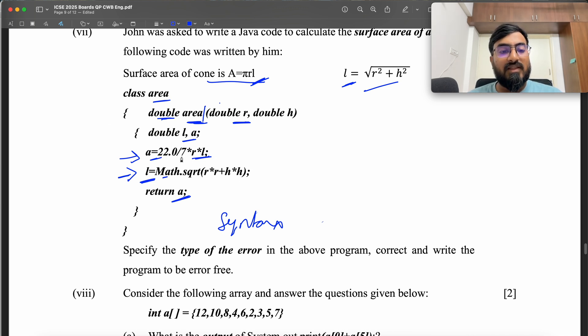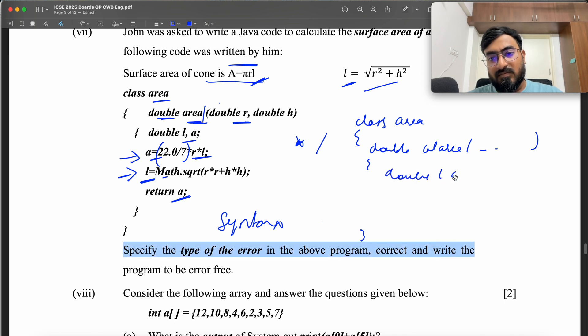So first fixing the name of this function because it is the same name as of the class, which should be in the case of a constructor. But since we are going to return a value, change this to say maybe area one or something, some other name. And then calculate L first and then A. So if I write this, it has to be class area. You can say double, say calculate area. You take both the double parameters, then you do double L and A. This has to be filled with these two. And then you do this line first. Calculate L first, then calculate A and then return the value of A. So this is going to be our correct class.